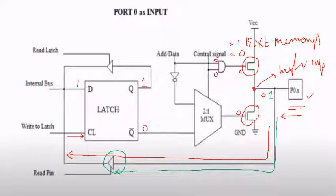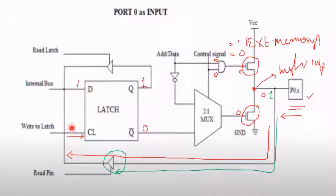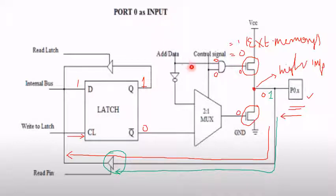To summarize: in order to act Port 0 as an input port, a 1 has to be loaded onto the latch, and in order to act as an input or output port, the control signal should be equal to 0. By making the control signal equal to 0 and placing a 1 to the latch and enabling the latch, the output of the latch is 1 and Q-bar is 0. Since this 0 is given to the mux — the reason we connected a mux here is that Port 0 can act as an input-output port as well as an external memory port for accessing external memory. A multiplexer is connected here to enable this dual function.